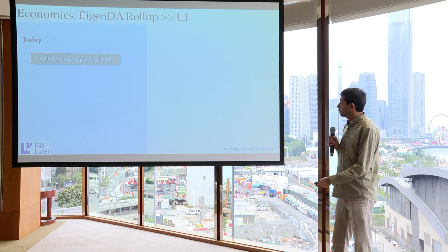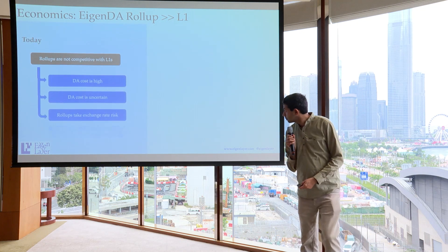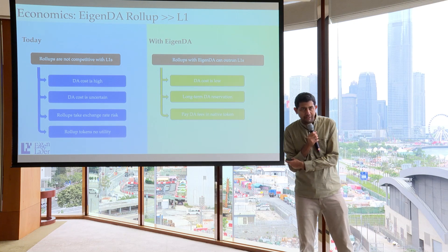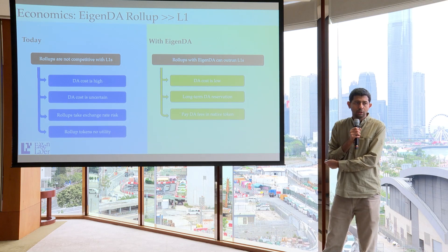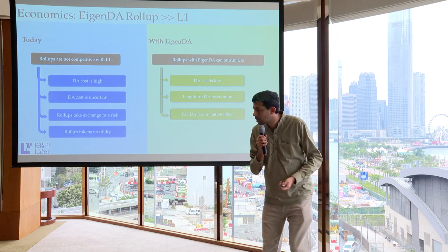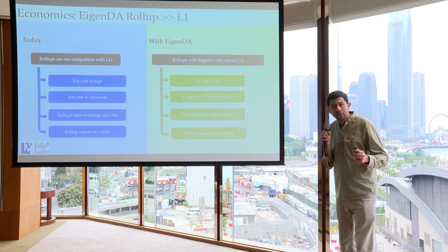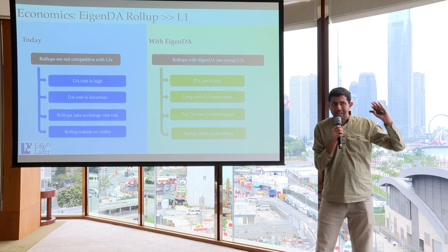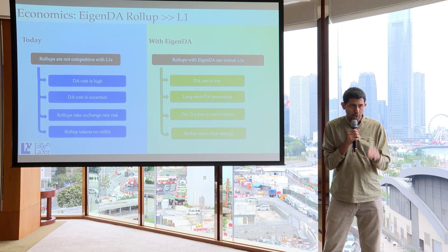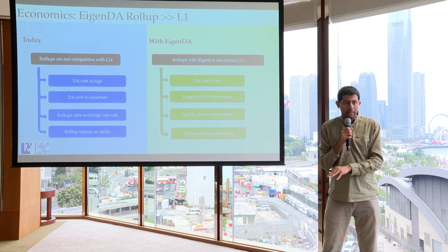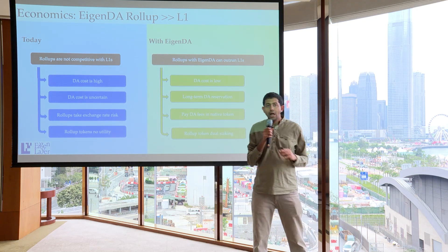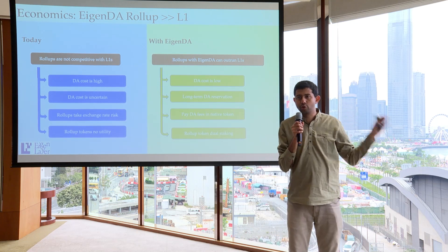The next feature: you can pay data availability fees for reservation in your own token. So you don't need to pay in ETH or EIGEN or some other thing — just pay in your own token. And finally, rollups using EigenDA can participate in dual staking: you actually use your own token to also verify data availability in addition to using ETH staking on EigenDA. It's one click — it's already there as part of the EigenDA system.